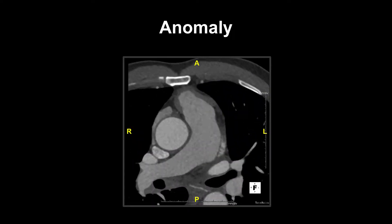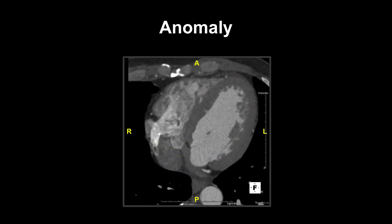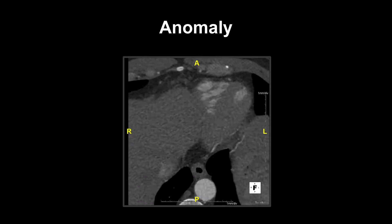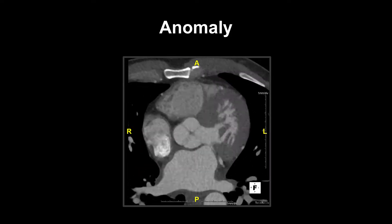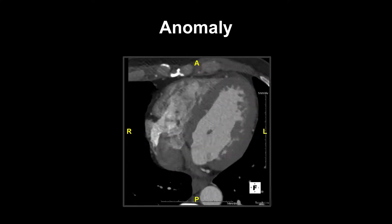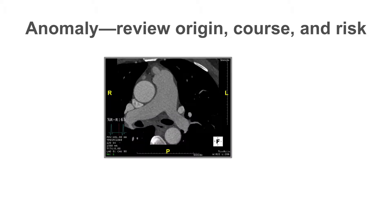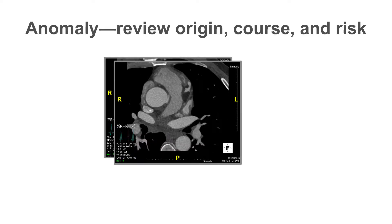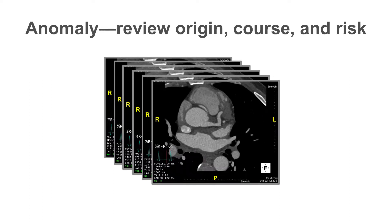Are you able to spot the anomaly on this scan? Look very closely as to where the right coronary artery originates from. When looking at anomalies, be careful to look at the origin of the vessel, its course, and evaluate the potential risk. In this case, just below the main pulmonary artery, the right coronary artery can be seen emerging from the left coronary cusp. It then follows an inter-arterial course, and this particular variant is considered to represent a malignant coronary artery.